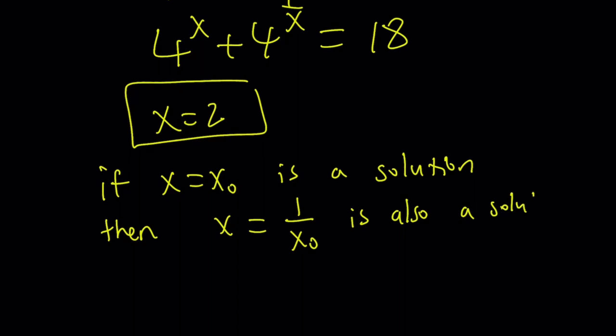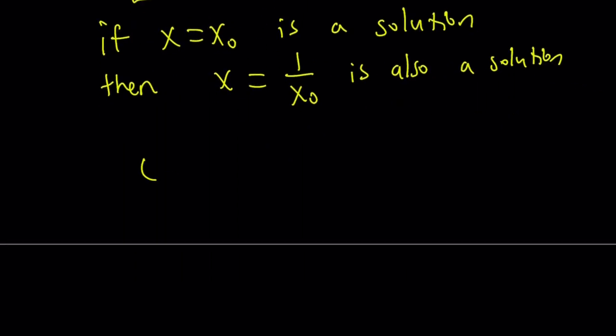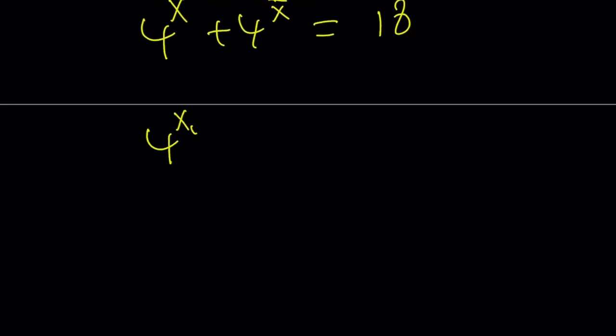Now, why am I saying that? Let me explain real quick. We have 4^x + 4^(1/x) equals a constant. Now, if you replace x with x₀, we don't care what the solution is, but you can also do it with 2, by the way. It's easy to see. But, notice that if I replace x₀ with 1/x₀,